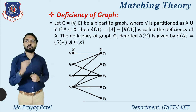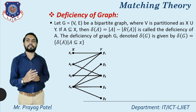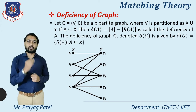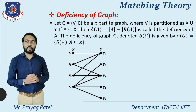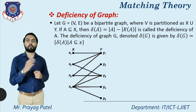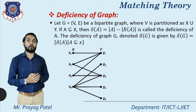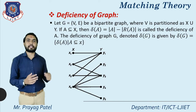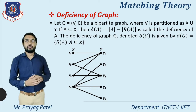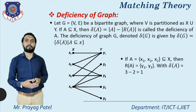We consider all possible sets A such as {x1, x2}, {x1, x2, x3}, etc., and find the deficiency for each set. Out of all these, the maximum deficiency is considered as δ(G). So if δ(A) = 2 for some A, then δ(G) is also 2.